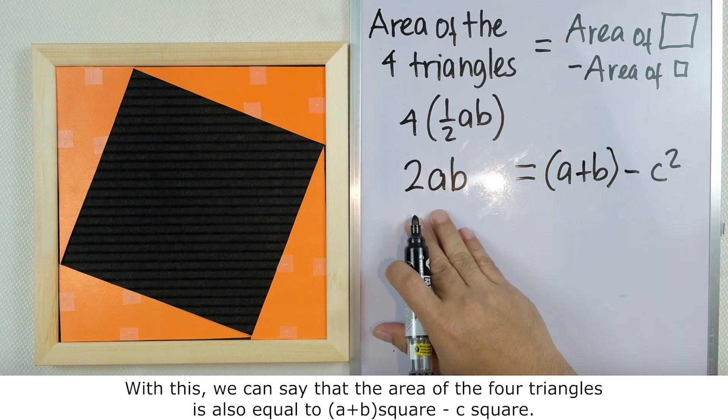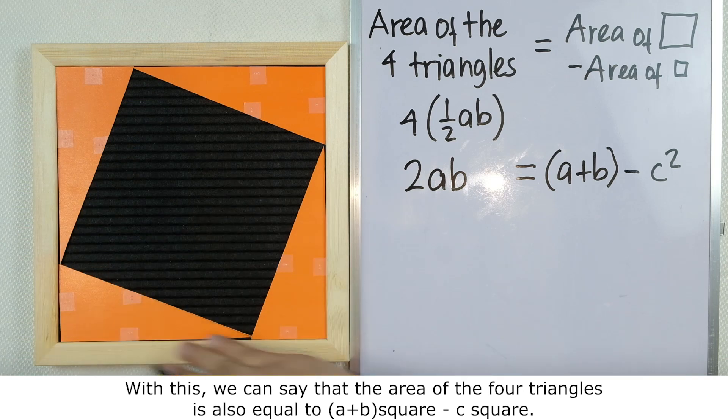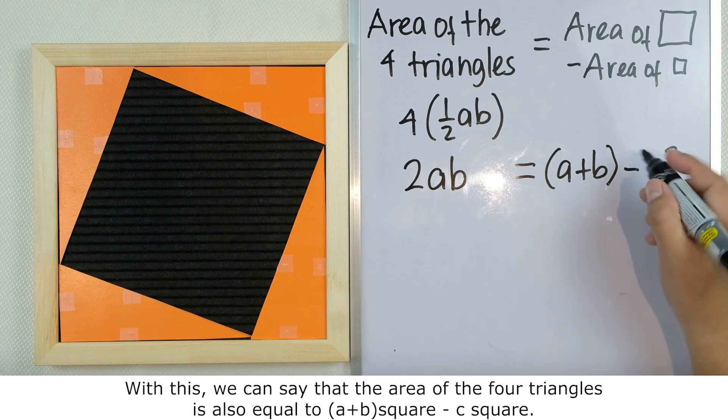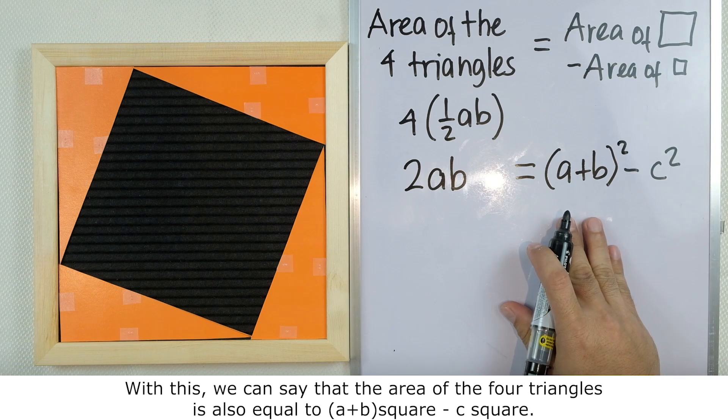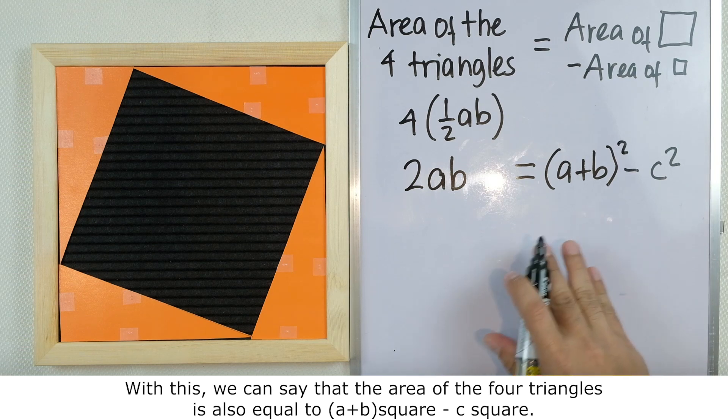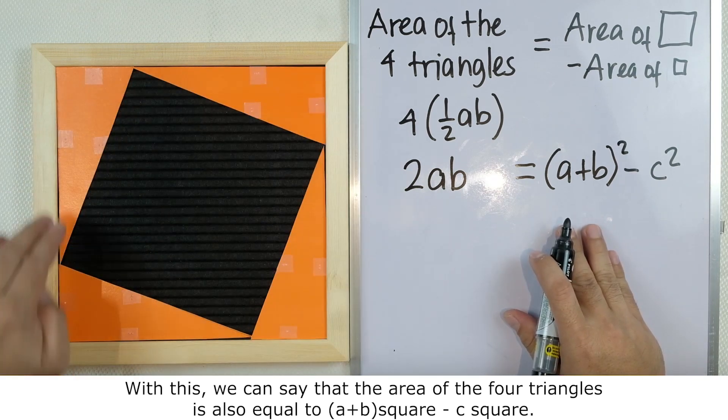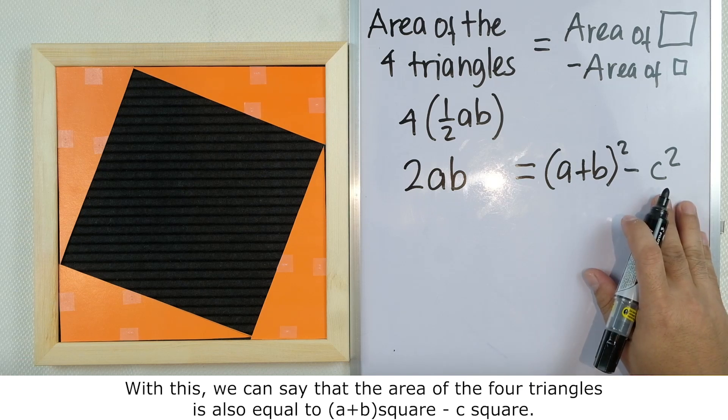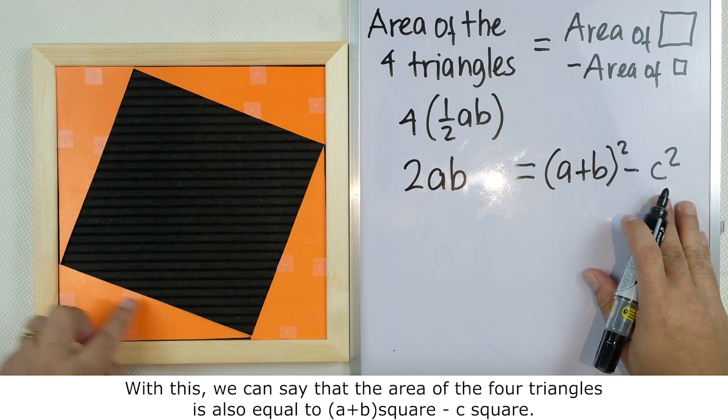Again, 2ab is the area of the four right triangles, (a+b)² is the area of the big square, and c² is the area of the small square.